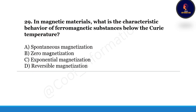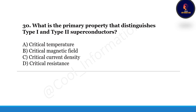Next question: in magnetic materials, what is the characteristic behavior of a ferromagnetic substance below the Curie temperature? The last option is reversible magnetization. Correct option for this question is A, spontaneous magnetization.